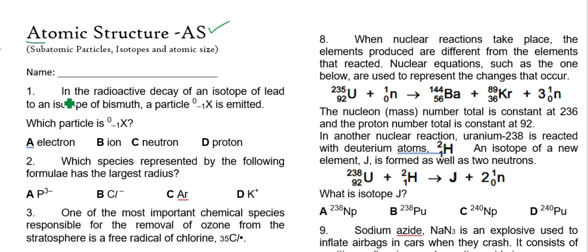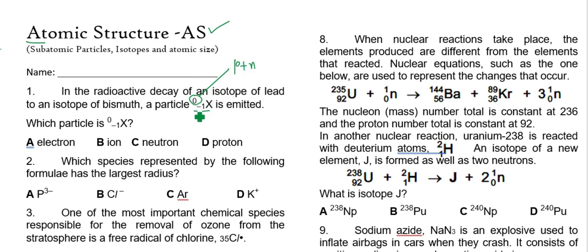We already discussed question 1 but we are going to discuss it again. In the radioactive decay of an isotope of lead to an isotope of bismuth, particle X has one negative charge and zero mass number, meaning there is no proton or neutron. Since no proton is changing, the only thing that changes is the charge, so we can say it is definitely an electron.